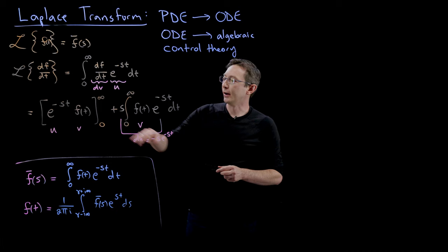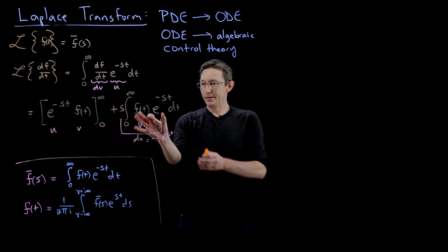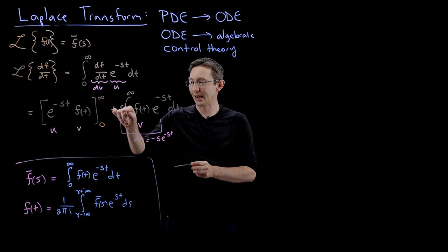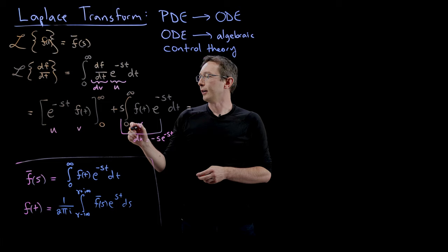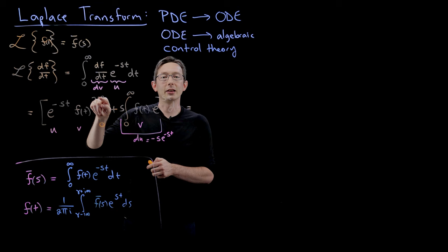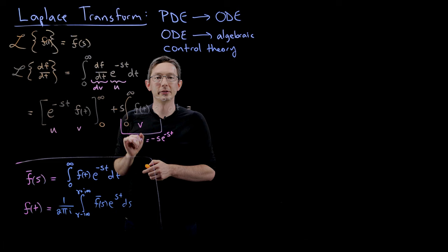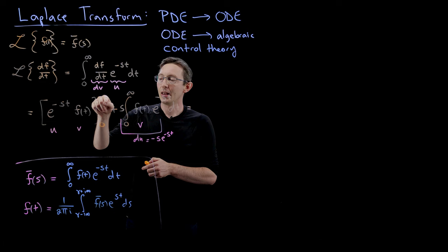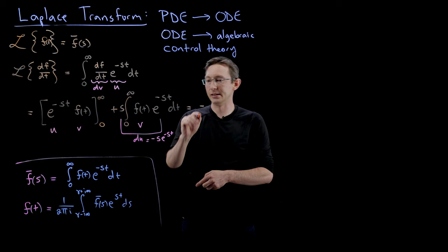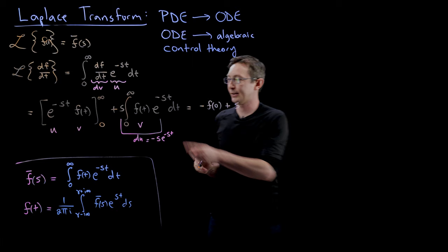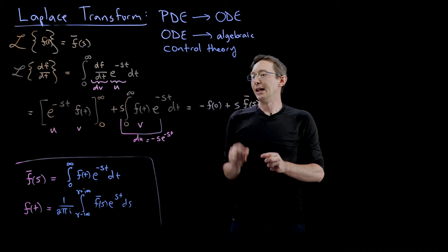This is actually really simple. The integral on the right is just the Laplace transform of F times S — so this is just S times F-bar. Now I have to evaluate the boundary term. E to the minus ST evaluated at T equals positive infinity equals zero. So this whole thing equals zero on that bound, and then it's minus this whole thing evaluated at zero: minus e to the zero, which is one, times F of zero. So we get minus F of zero plus S times the Laplace transform of F.